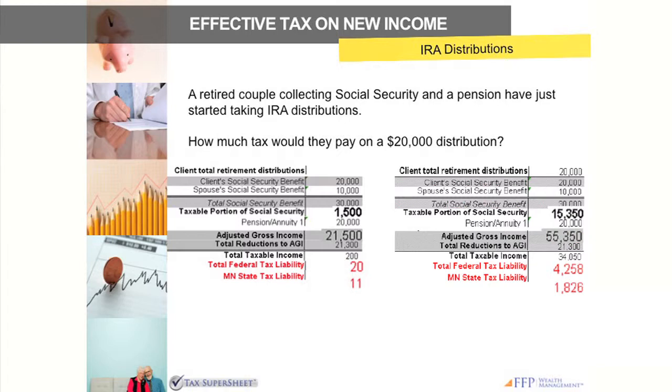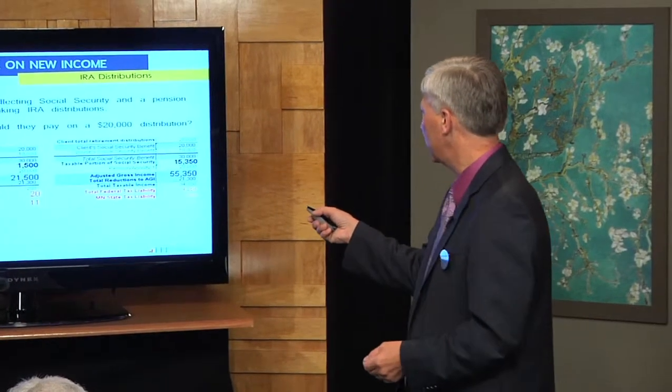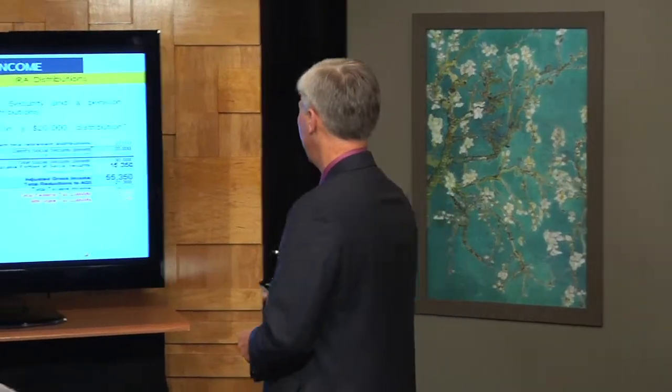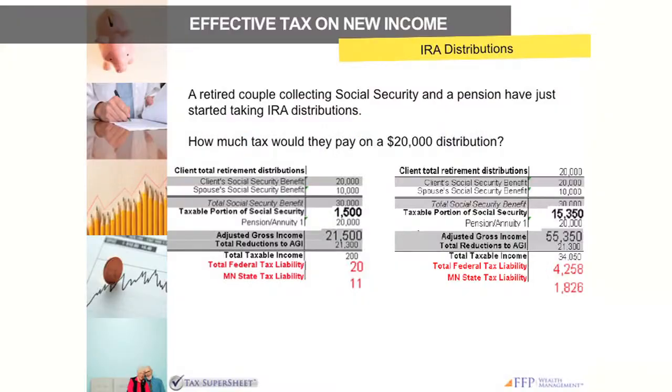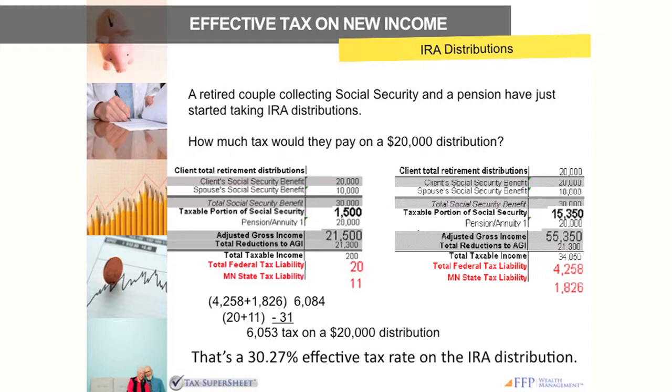The adjusted gross income has skyrocketed from twenty-one thousand to fifty-three thousand, and the tax liability has grown from thirty-one to six thousand eighty-four dollars. Even a logical thinking person would say, 'I'll be in the fifteen percent bracket — twenty thousand, that'd be three thousand dollars.' But we're talking about thirty percent on that last distribution. The twenty thousand dollars of income was taxed at thirty point twenty-seven percent, yet they're still in the fifteen percent bracket.